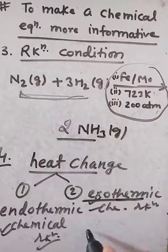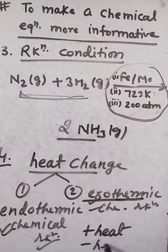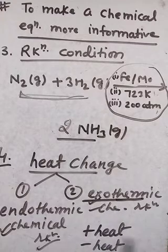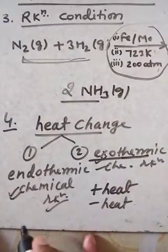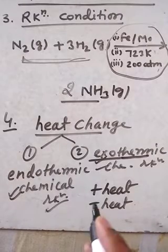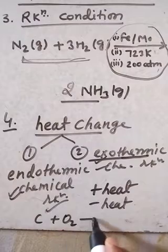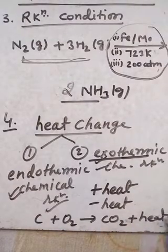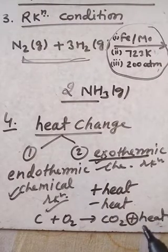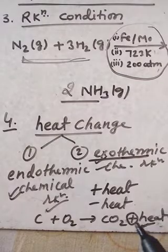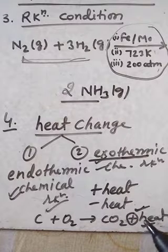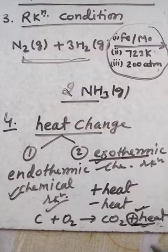To represent heat changes, we use a plus heat sign or minus heat sign on the product side. When heat is evolved, we add '+heat' in the product side — for example, coal burning in air: C + O2 → CO2 + heat. For an endothermic reaction, we use '−heat', and for an exothermic reaction we use '+heat' on the product side.